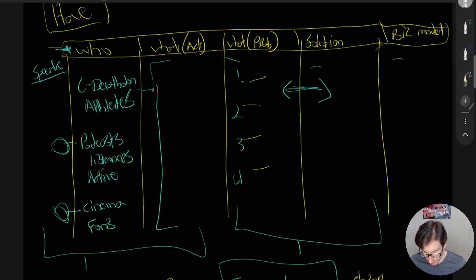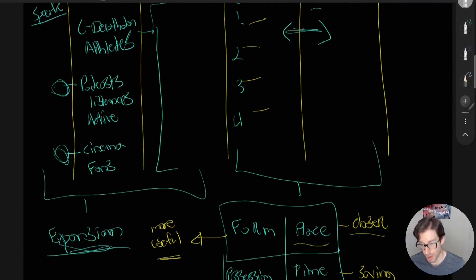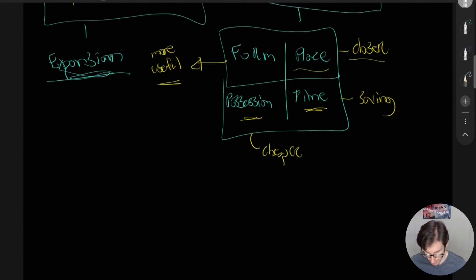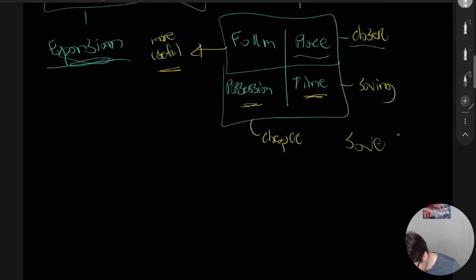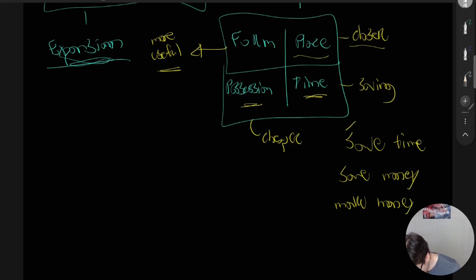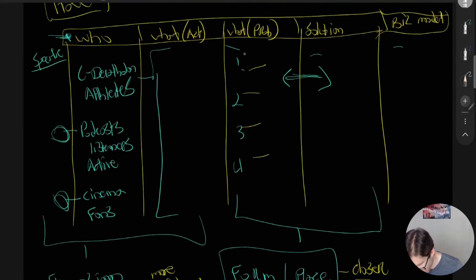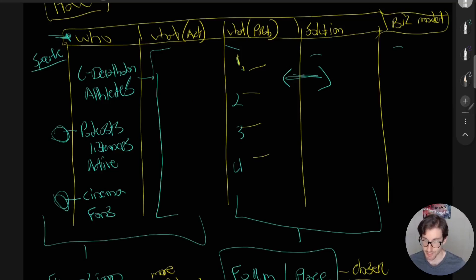Three questions that prompt the utility thought process: Am I saving time? Am I saving money? Or am I making money for the customer? For each problem you've listed, ask: in what way can I either save this person time, save them money, or make them money? That bridges the gap between the problems and solutions columns much more easily.